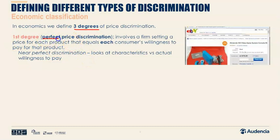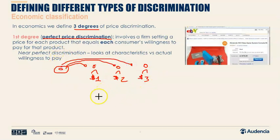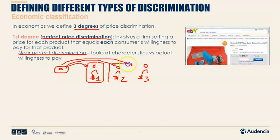First degree is perfect price discrimination, where I charge each person their willingness to pay. I ask: how much are you willing to pay for a donut? One person says $1, another $2, another $3 — and I sell each donut at that person's willingness to pay. In practice, people rarely reveal this, so we get near-perfect price discrimination, where we infer willingness to pay from characteristics. On eBay, for example, bidding behavior reveals willingness to pay as people raise or lower their bids.